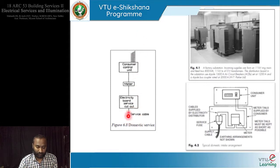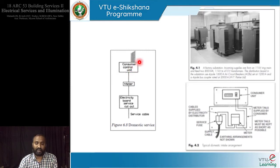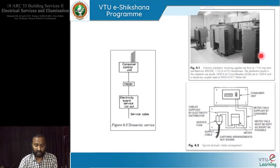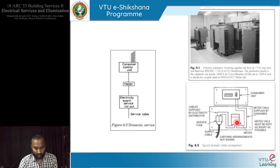The consumer electricity comes from the government supply. We have the meter where we get billed, and finally it goes to the consumer control units. From the consumer control units, it is up to the consumer's design to take it the way they want. The boxes shown here are nothing but your combination of switchgear and transformers — different representations of the same concept. This is where government supply comes in, gets metered, then goes to various spaces within the building.